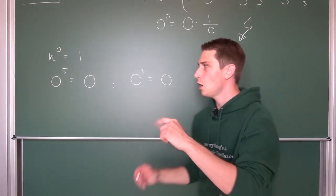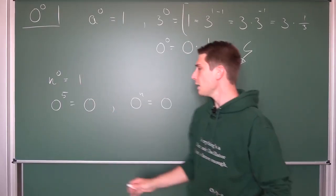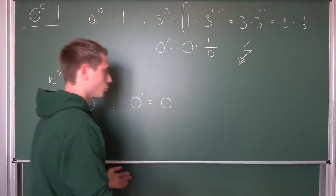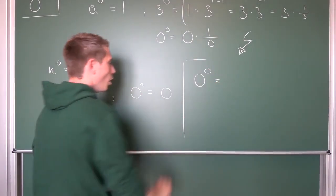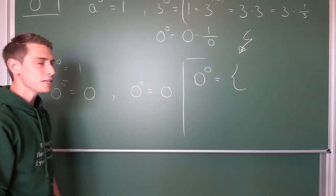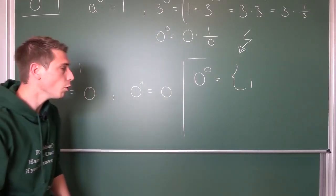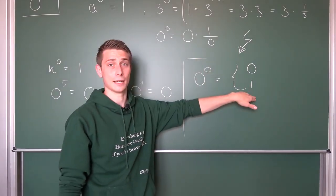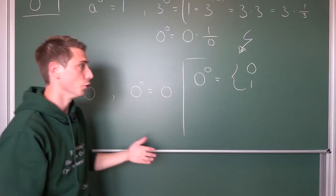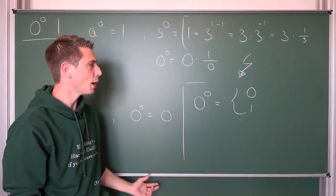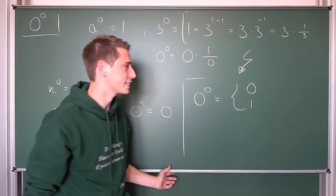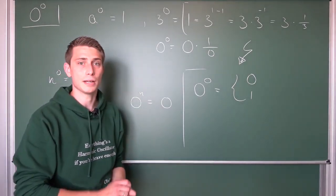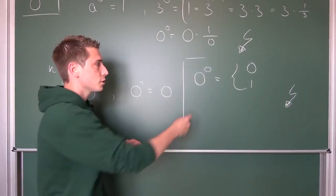Now we have two statements. On the one hand, if we raise something to the zero power, it gives us 1. If we have 0 as the base and raise it to some positive power, it's going to be 0. So what happens if we take 0 to the zero power? By the first definition it would be 1, by the second it would be 0. Is it 0 or is it 1? We don't know. We can't really assign a value to 0 to the zero power here, because it could be 0, it could be 1, it could be 1 half — we don't know. This leads us to another contradiction, because we can't assign two values to one expression.